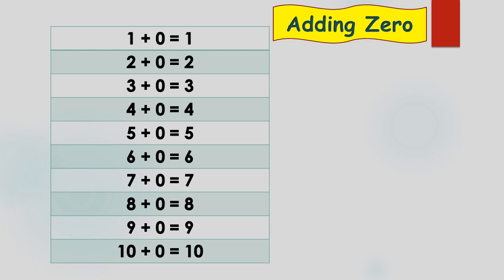Look at the table. From this table, you can understand easily that adding 0 to a number gives the same number.